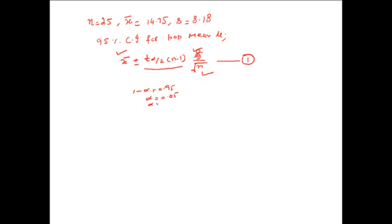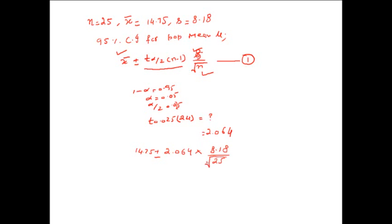From the example: n = 25, mean = 14.75, standard deviation s = 8.18. We calculate 95% confidence interval using the t-distribution formula since sigma is not given. With 1 minus alpha = 0.95, alpha = 0.05, alpha/2 = 0.025, and df = n minus 1 = 24, the t value from the table is t_0.025,24 = 2.064. Substituting: 14.75 ± 2.064 × (8.18 / √25) = 14.75 ± 2.064 × 1.636 = 14.75 ± 3.76.